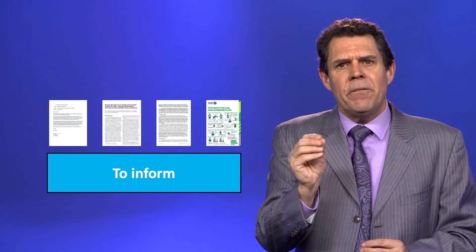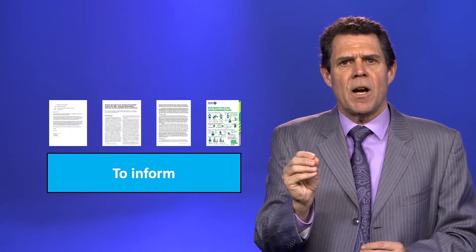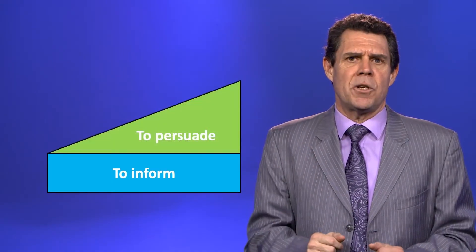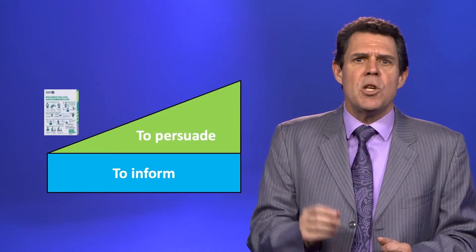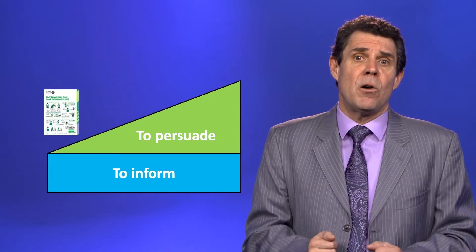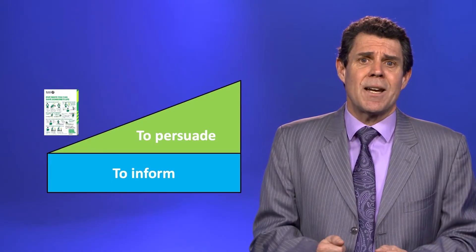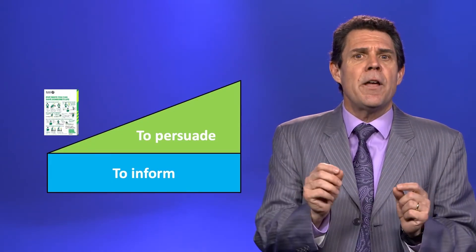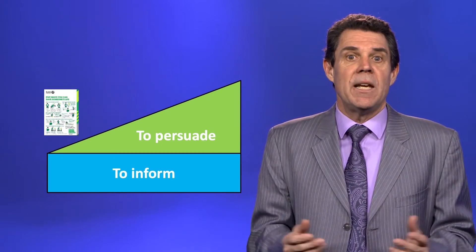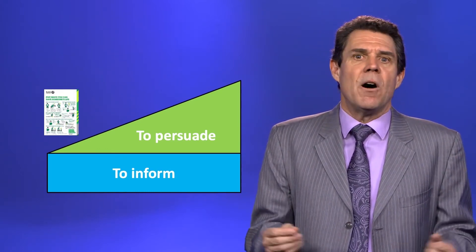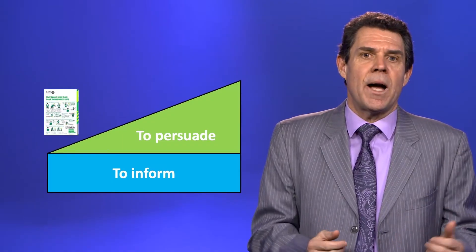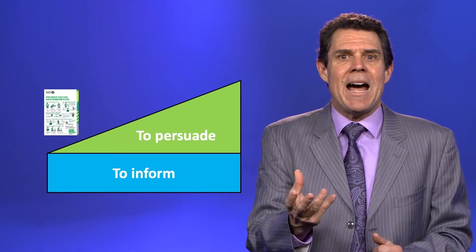However, different types of documents have different levels of persuasion. For instance, you might write a set of instructions in which the audience does not care about anything other than how to do the process. In effect, the audience is not at all interested in the why, but only in the how.